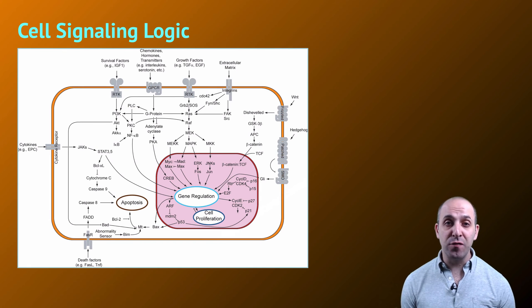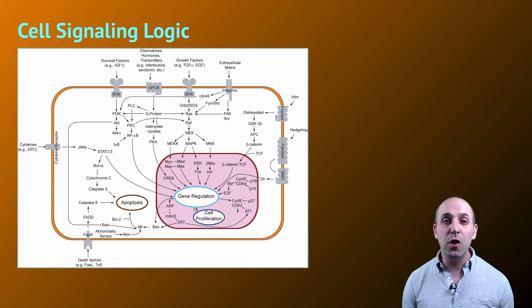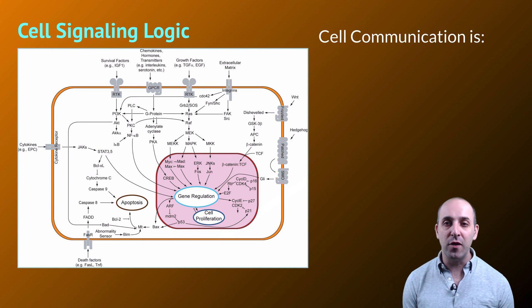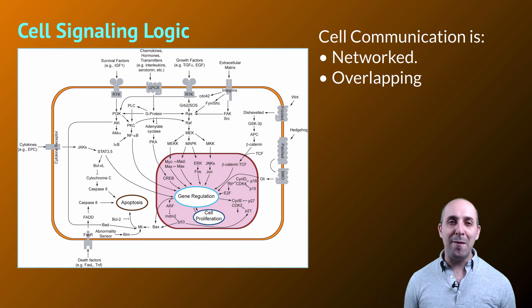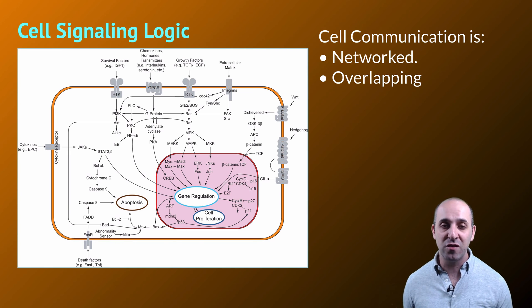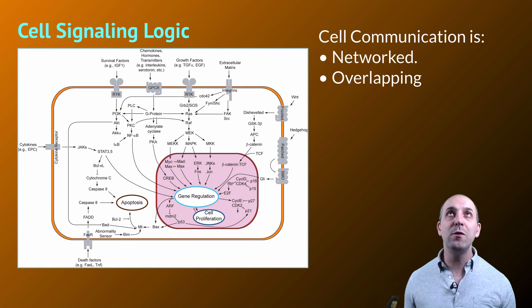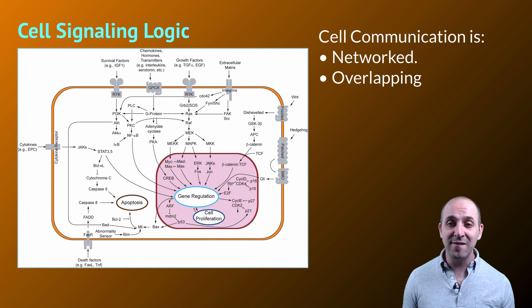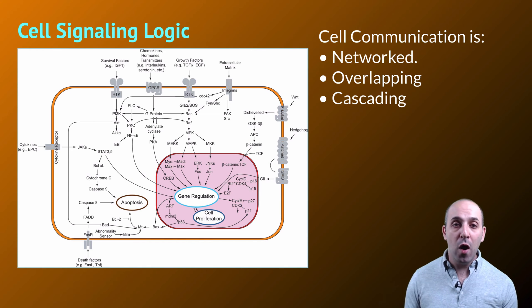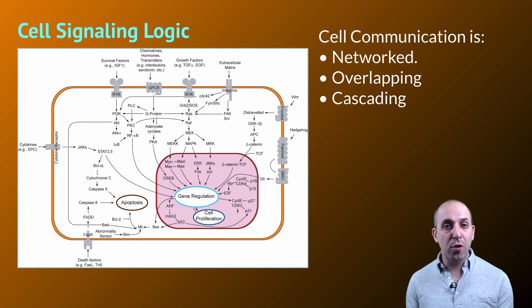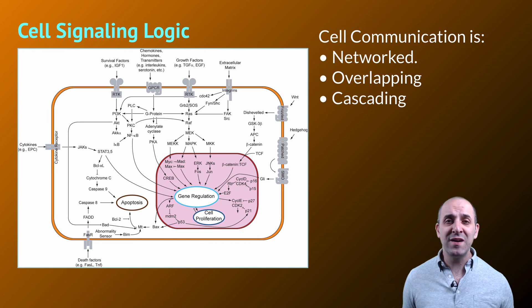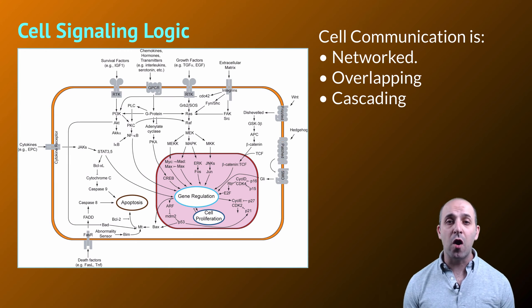Moving back up a level of abstraction from the nitty-gritty details of a G-protein linked signal transduction response, let's look at the overall logic of cell signaling. Cellular communication is both networked and overlapping — the different communication pathways operate simultaneously and in different combinations, with internal proteins in the pathways frequently responding to multiple different cues from different cell signaling pathways, as you can see in the diagram. It's also cascading: one protein activates another protein that activates another protein and so on. The notion of a cascade is pretty universal in complex systems, and cell communication systems are no different.